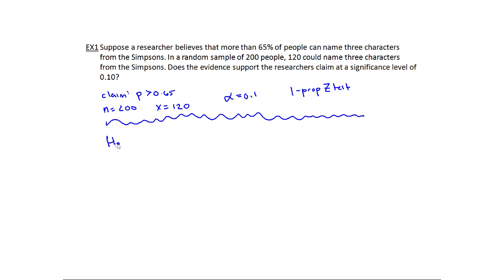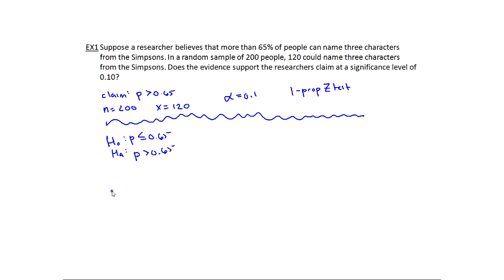For H-naught and H-A: the claim didn't have an equality, so it's H-A. p is greater than 0.65, and H-naught would then be p is less than or equal to 0.65. As usual, what I need is a p-value. It's easy to get confused because on the calculator you have so many different things that come out. The p-value on the calculator is just labeled p, but you're not going to compare it to 65% — you always compare the p-value to alpha.